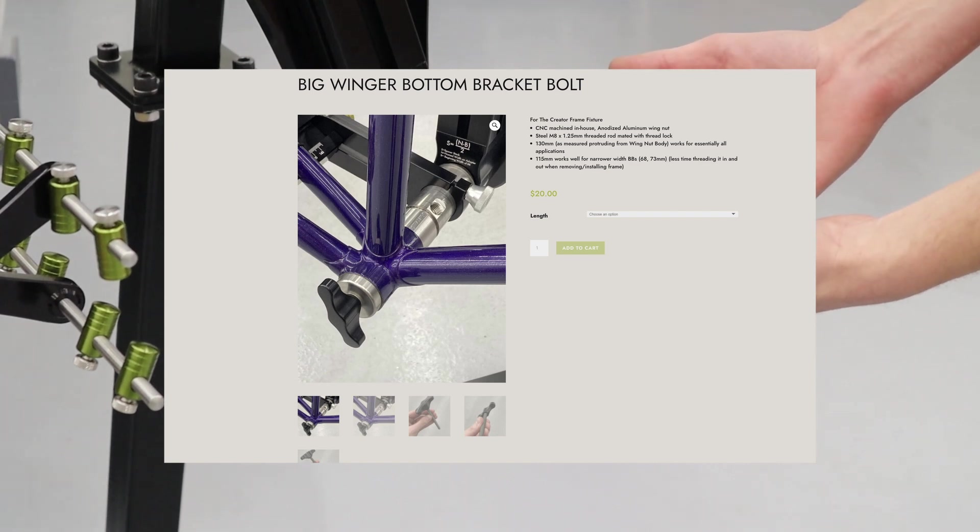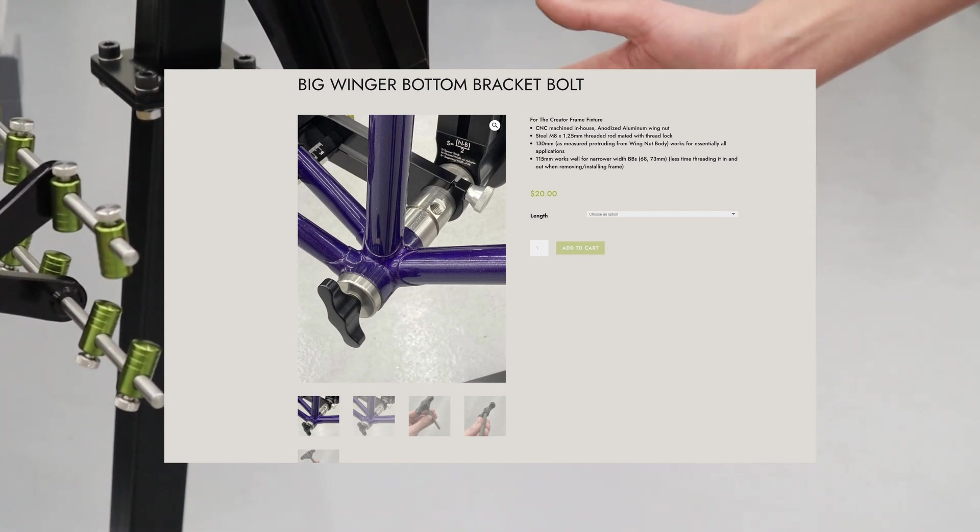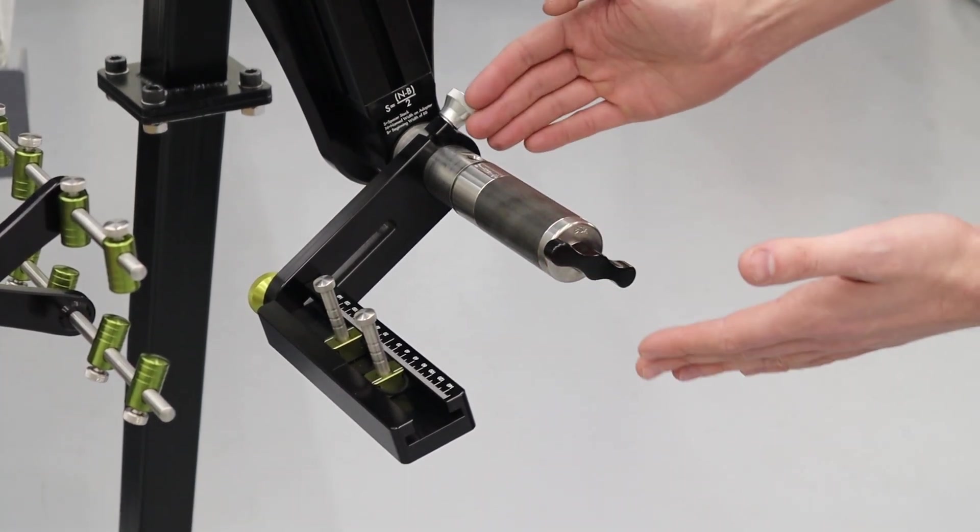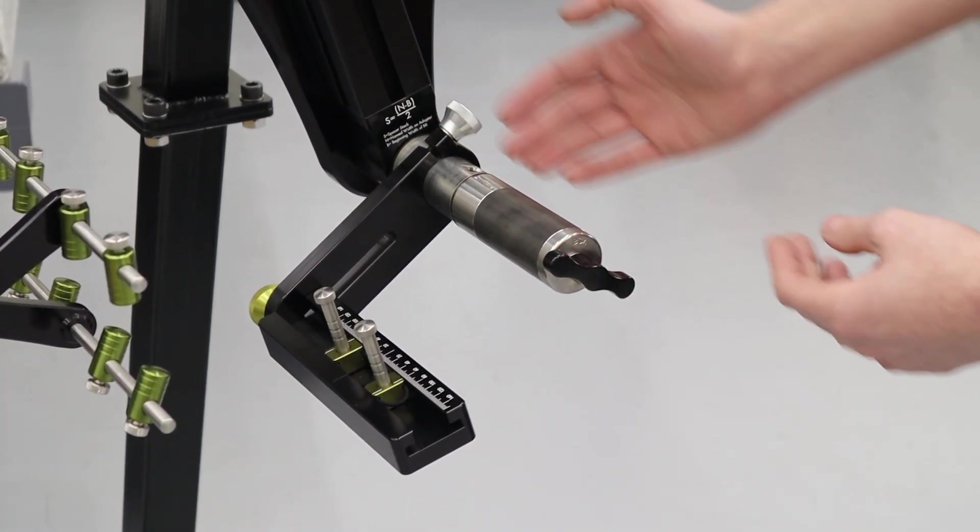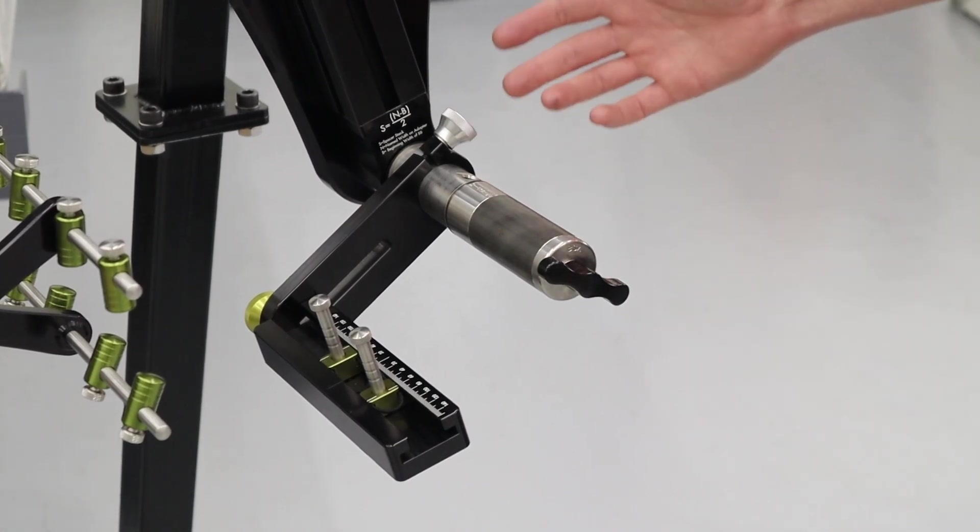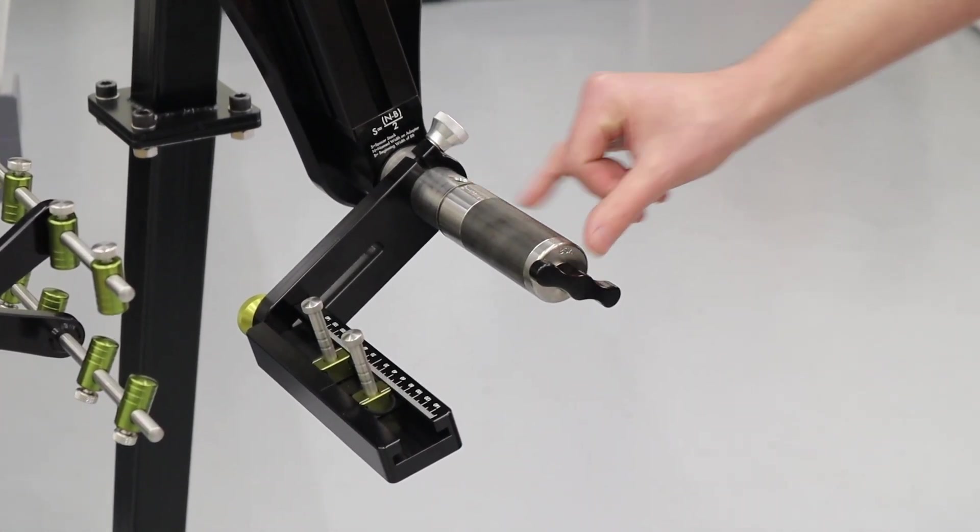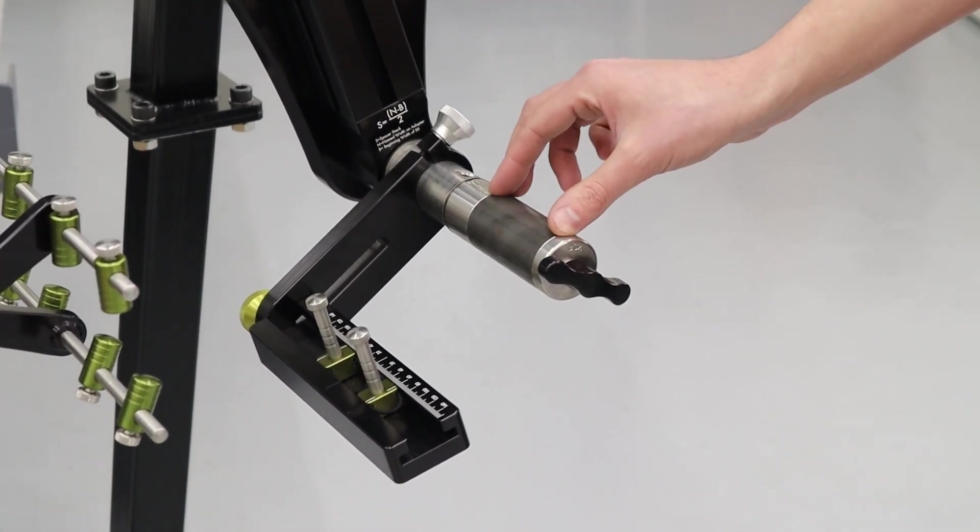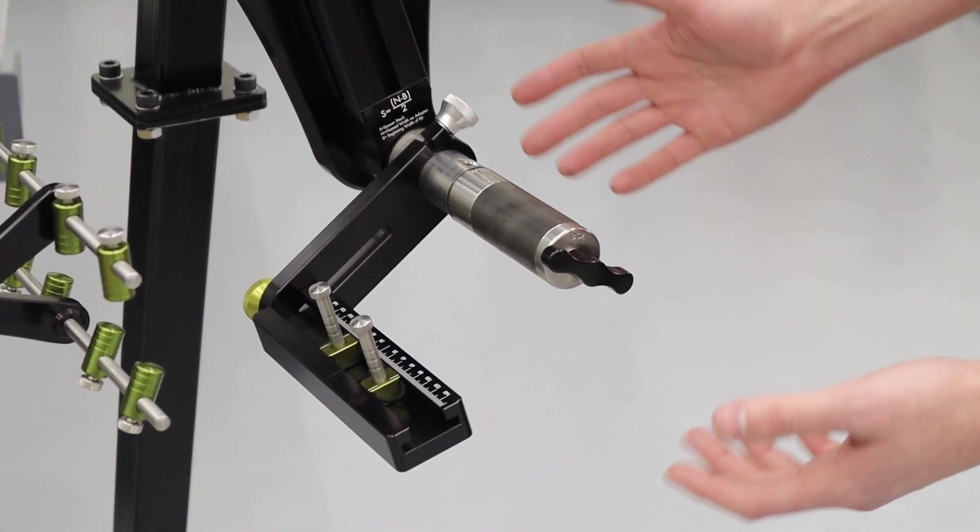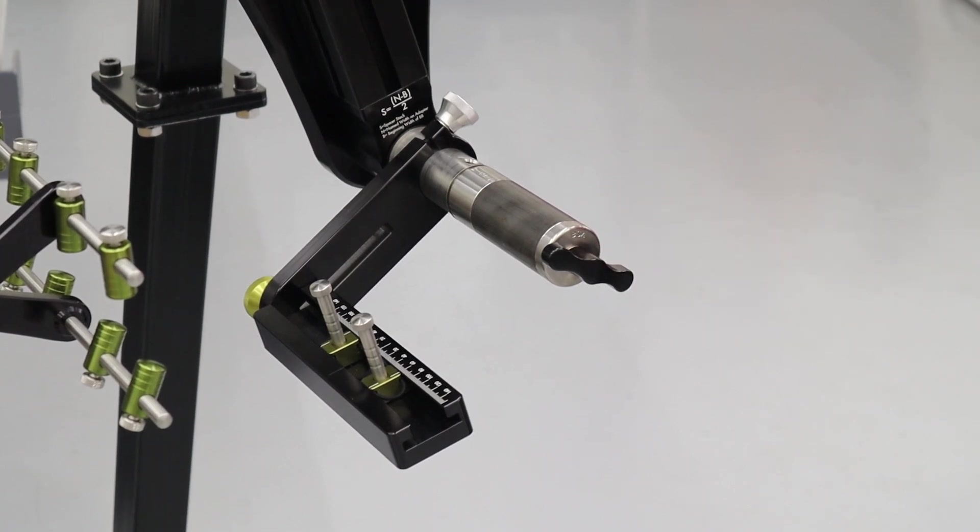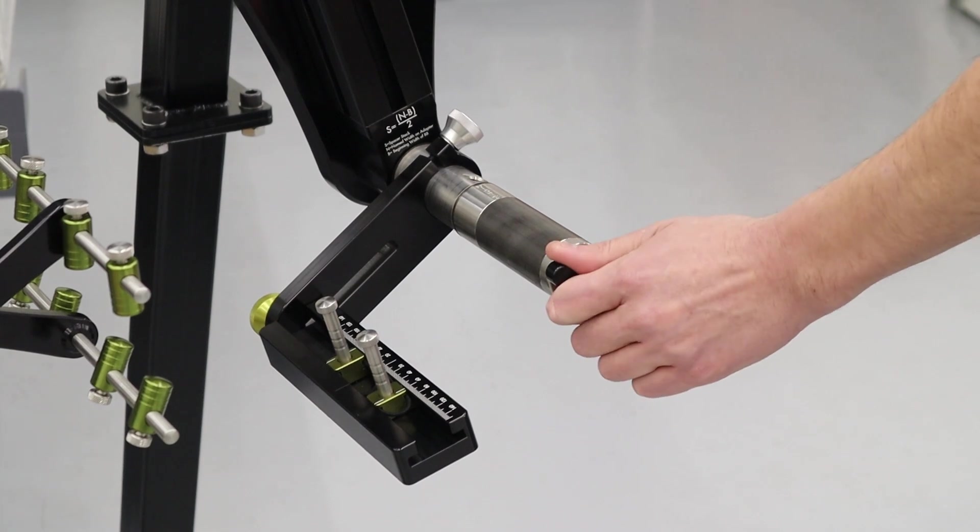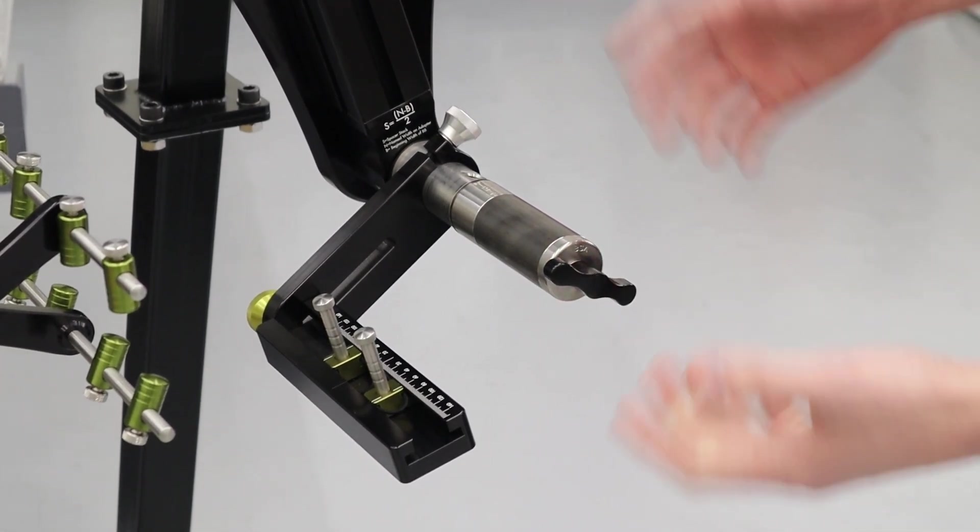These are available in our web store to buy separately but they also come standard now and there's two lengths. The one that ships standard is the long one, 130 millimeters, so that you can do anything including fat bikes. We sell a shorter one too that just saves you some turns because most people are building with narrower bottom bracket shells. I think it really rounds out the look of the fixture, makes it nice and makes it a lot easier to use without running after wrenches.